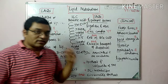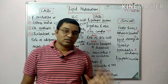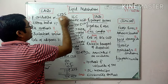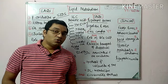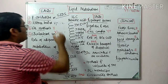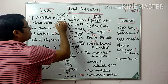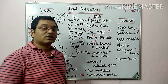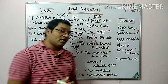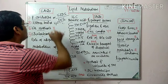In beta oxidation, you have to write the steps, energetics, regulation, and disorders. One disorder is SIDS — Sudden Infant Death Syndrome — where 10% of cases are due to deficiency of medium chain acyl CoA dehydrogenase. Another is Jamaican vomiting sickness, caused by eating unripe ackee fruit containing the toxin hypoglycin A, which inhibits medium chain acyl CoA dehydrogenase, thereby affecting beta oxidation.